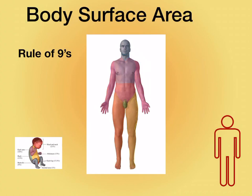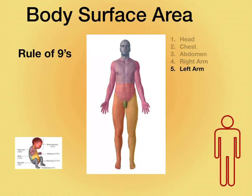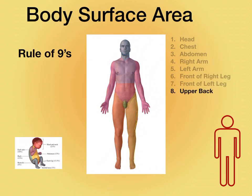Probably the most familiar one to us is the rule of nines. With this, we break the body up into 11 regions. Each one's about 9%, so the head is 9%, the chest is 9%, the abdomen is about 9%, the right arm is 9%, left arm is 9%, front of right leg is 9%, front of left leg is 9%, then we have the upper back, the lower back, back of right leg, back of left leg.